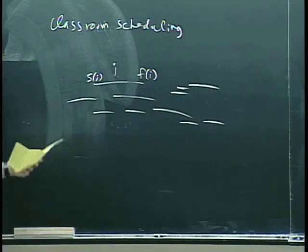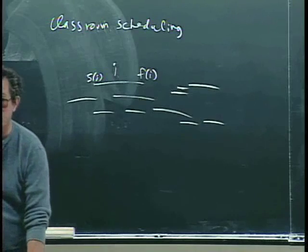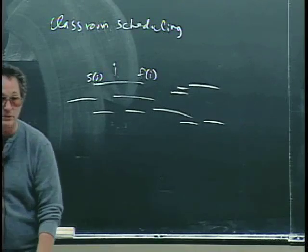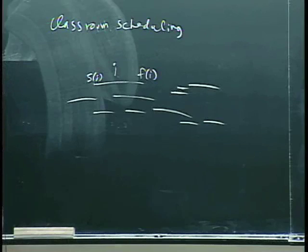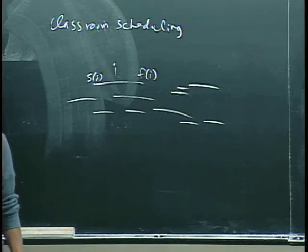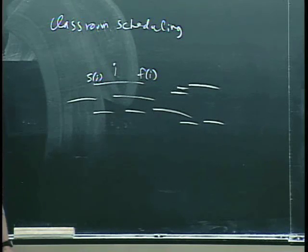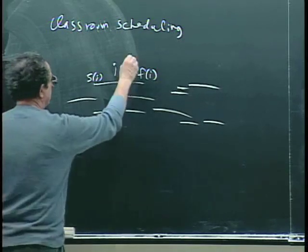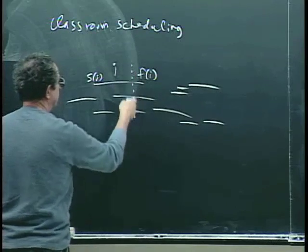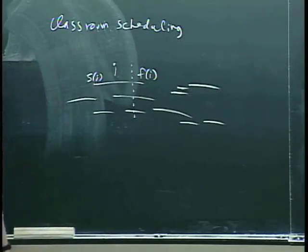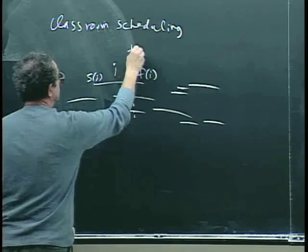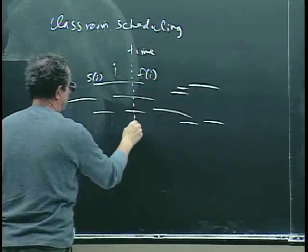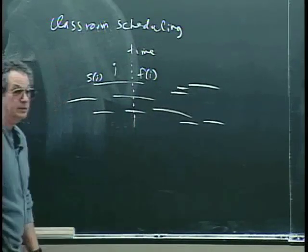Unlike the other scheduling problem that we looked at, the problem isn't to choose which intervals. We have to schedule all of them. All the classes have got to be scheduled, but each class has got to be put into a classroom. And you can't have two classes in the same classroom. So if you have three classes that have to be scheduled at the same point in time, which is time here, then you know you need at least three classrooms.